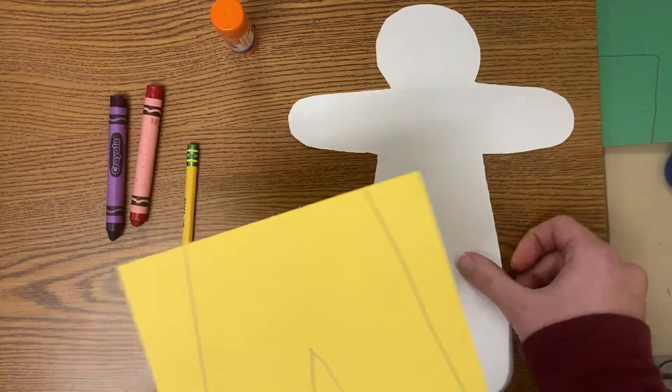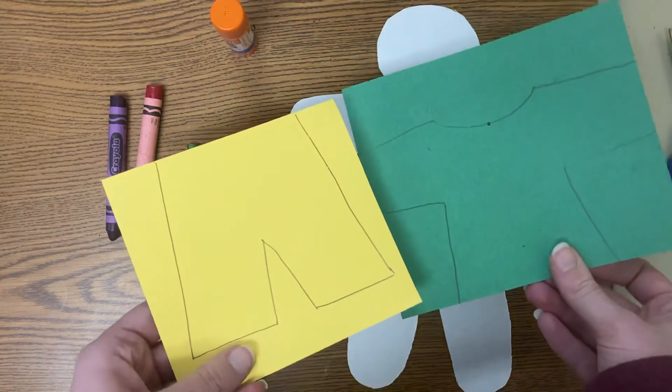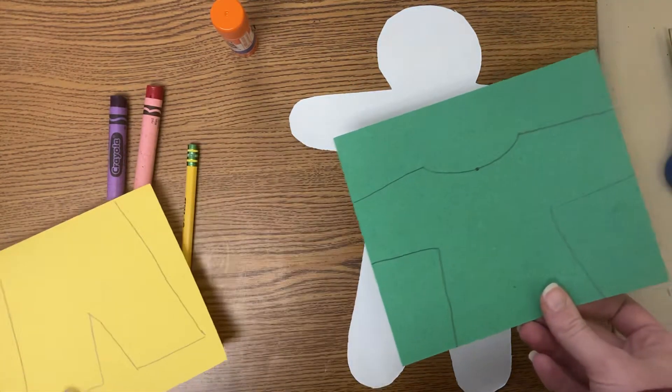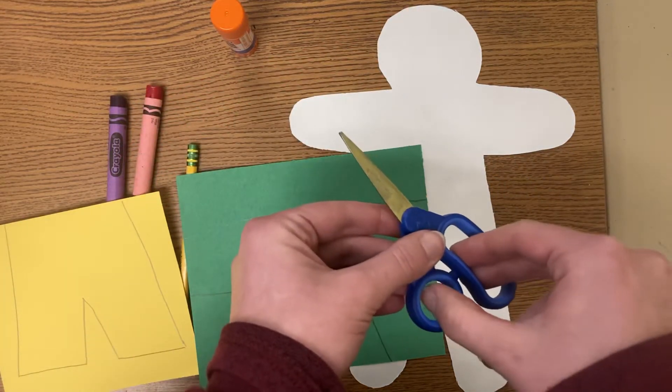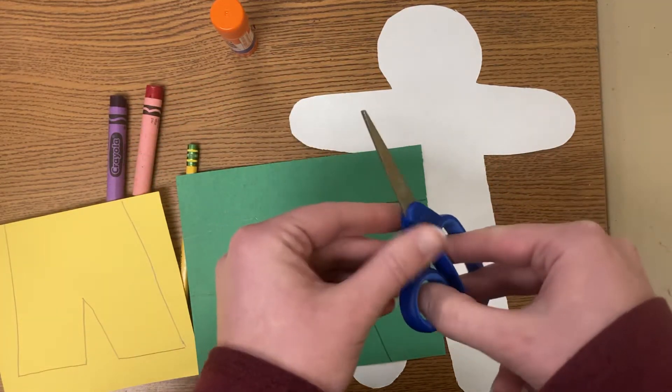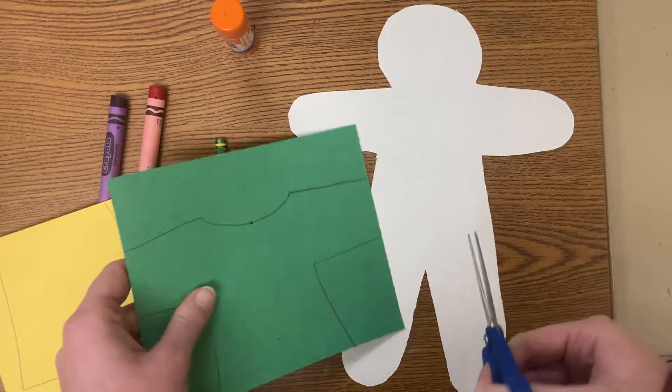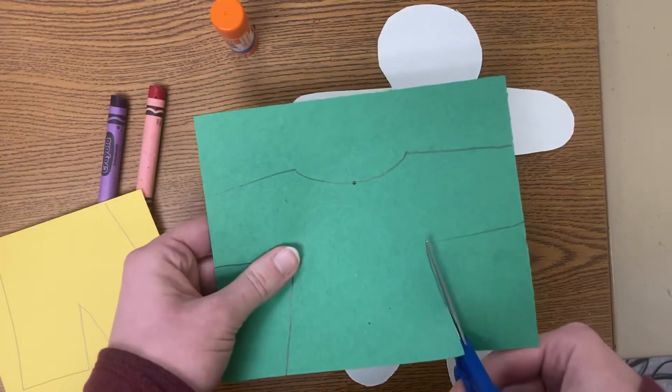Now I'm ready to cut so I'm going to cut out my shirt and I'm going to cut my pants so I can get clothes on my person. Remember your scissors, you should have your thumb in the small part and your fingers, your two fingers in the bottom.